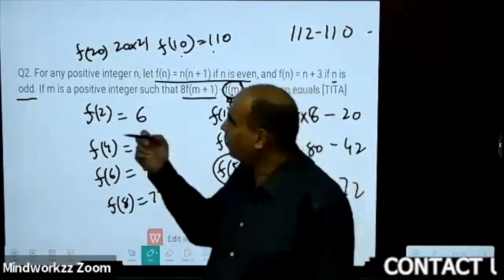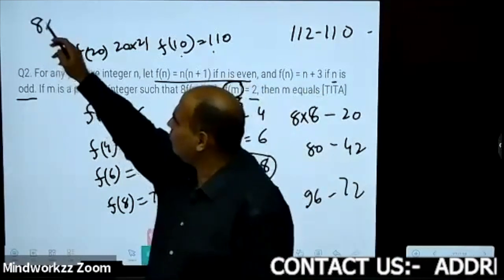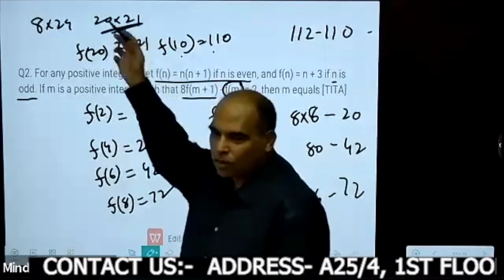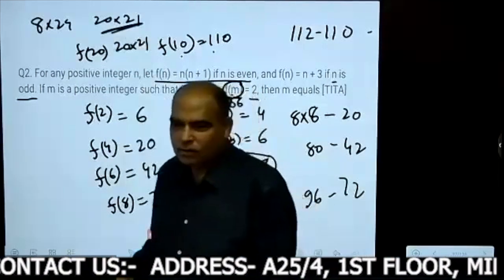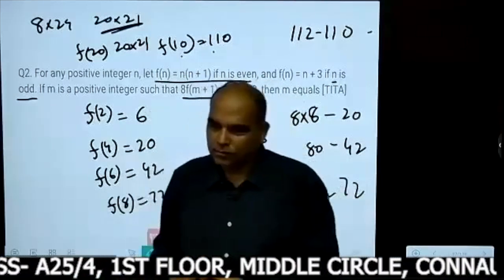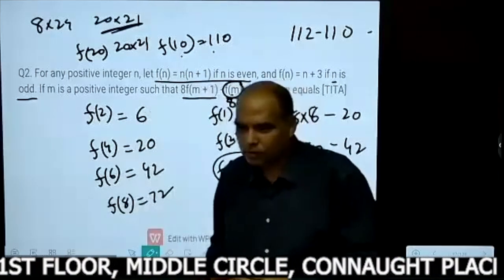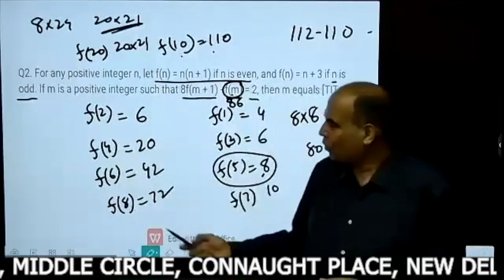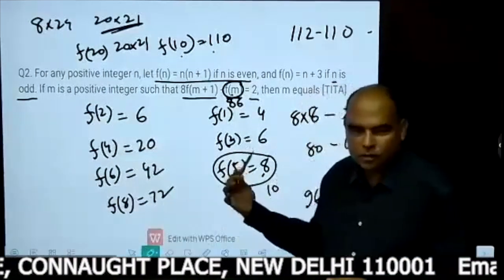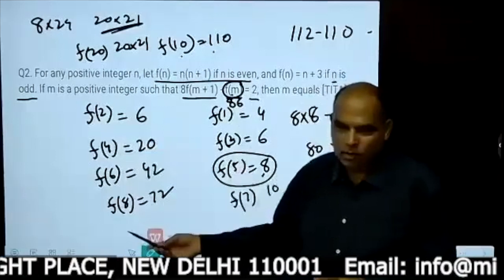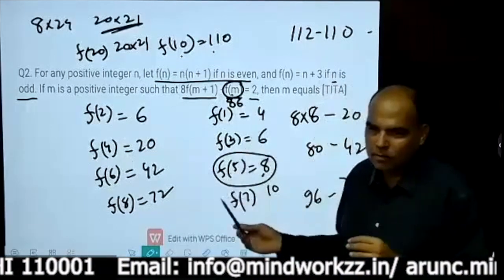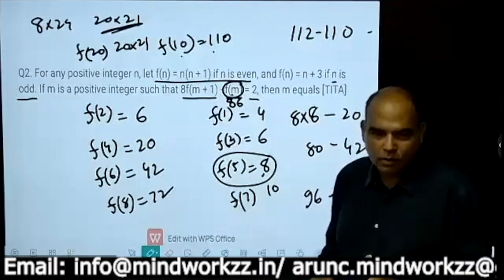If you compare 8 times 24 against 20 times 21, you realize this is going to be much larger, so it's not an endless chase. This grows much more powerfully and faster, so if this has to be less than 8 times this, it's not a very long search.